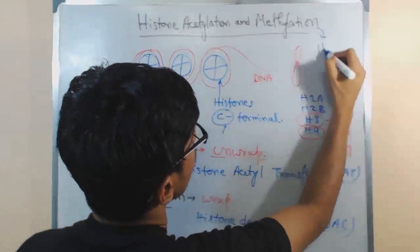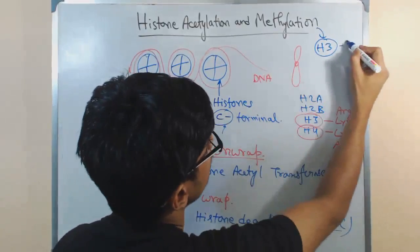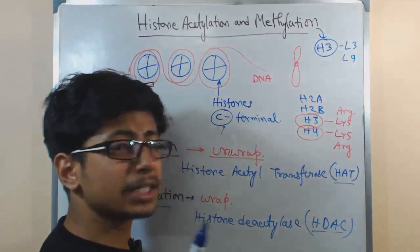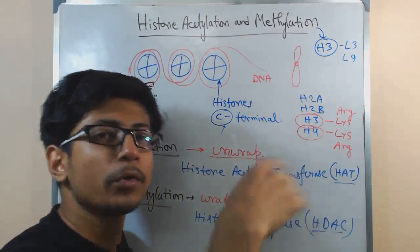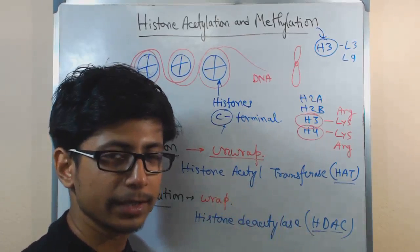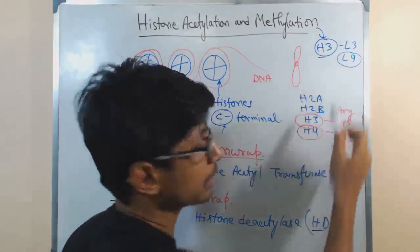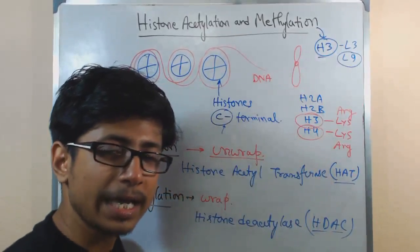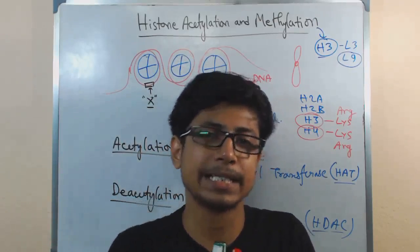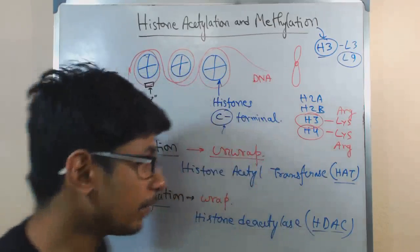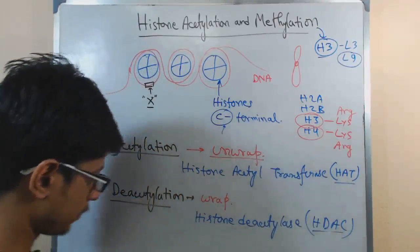For example, if methylation takes place in histone H3, which is a very common target, and it occurs at lysine residue 3 (H3K3), it will activate and open or unwrap the DNA, making the gene accessible for transcription. However, if the same type of methylation takes place at lysine residue 9 of H3 (H3K9) in that same organism, it turns the gene into the inactivated form — the DNA is never opened from the histone.